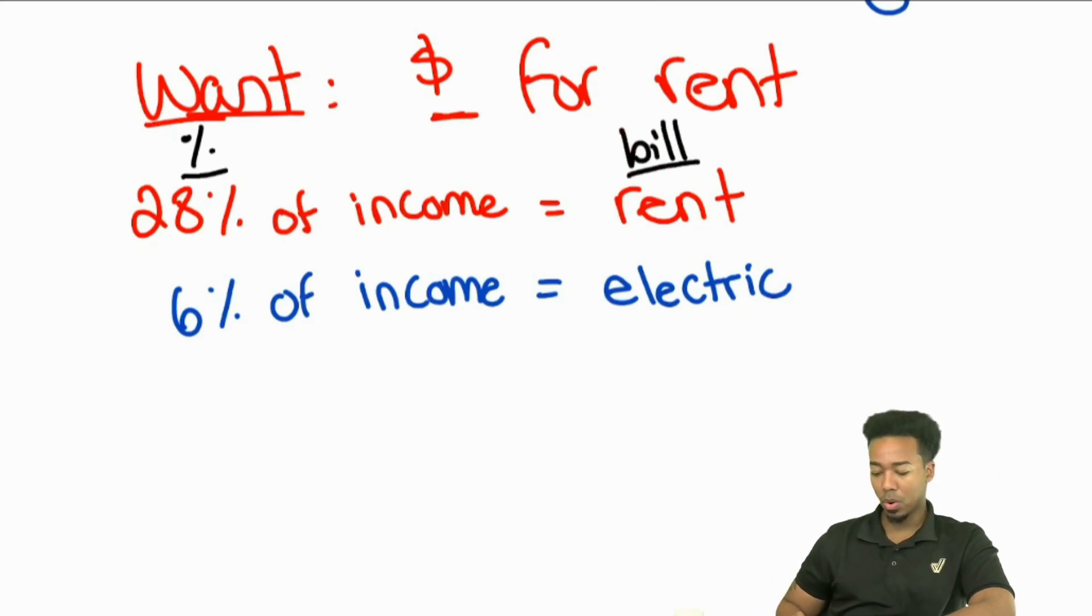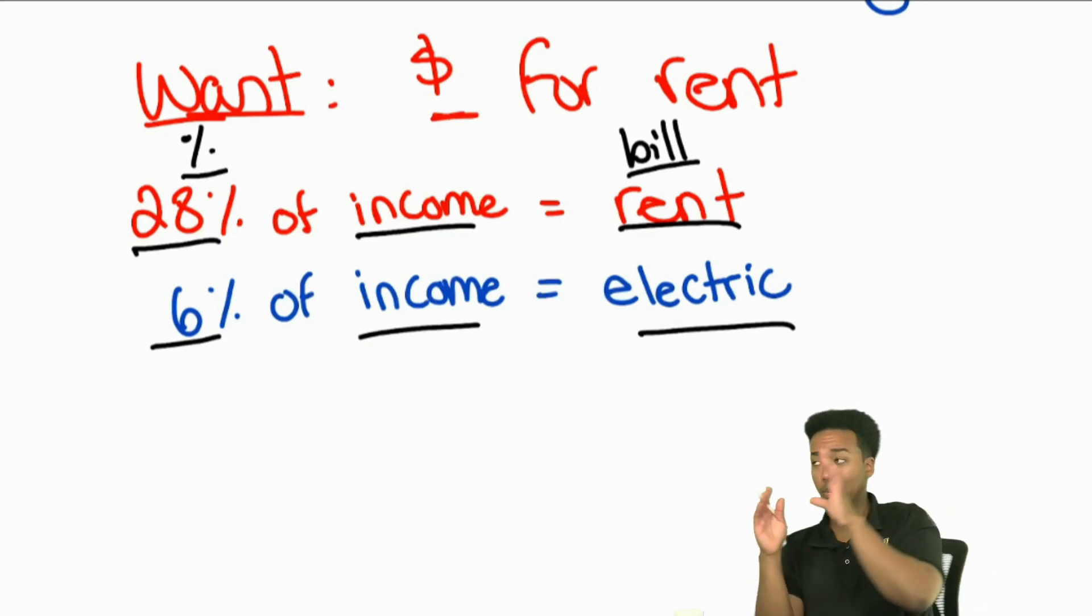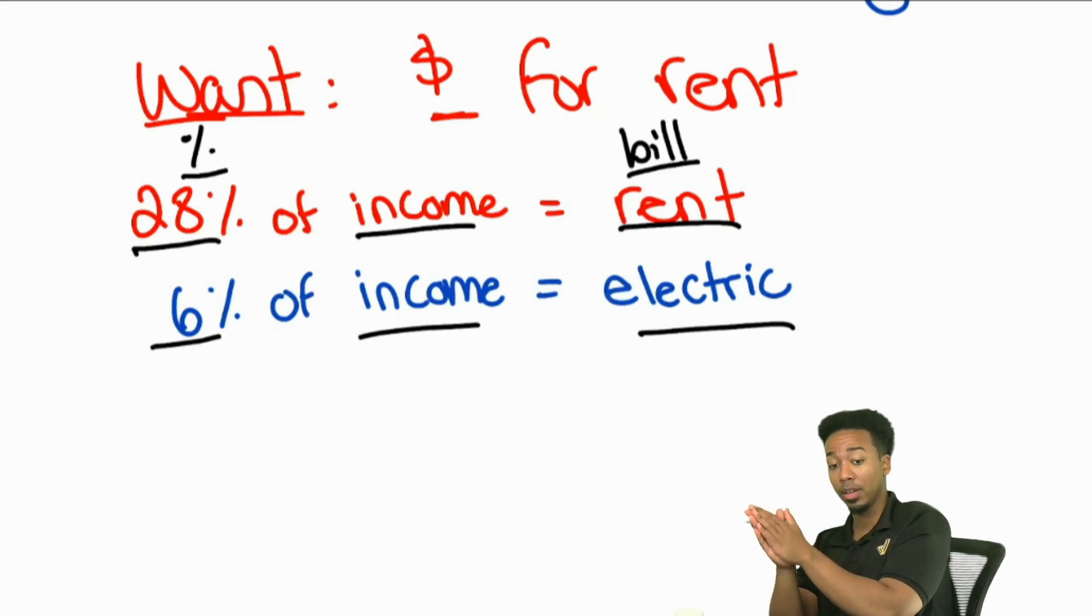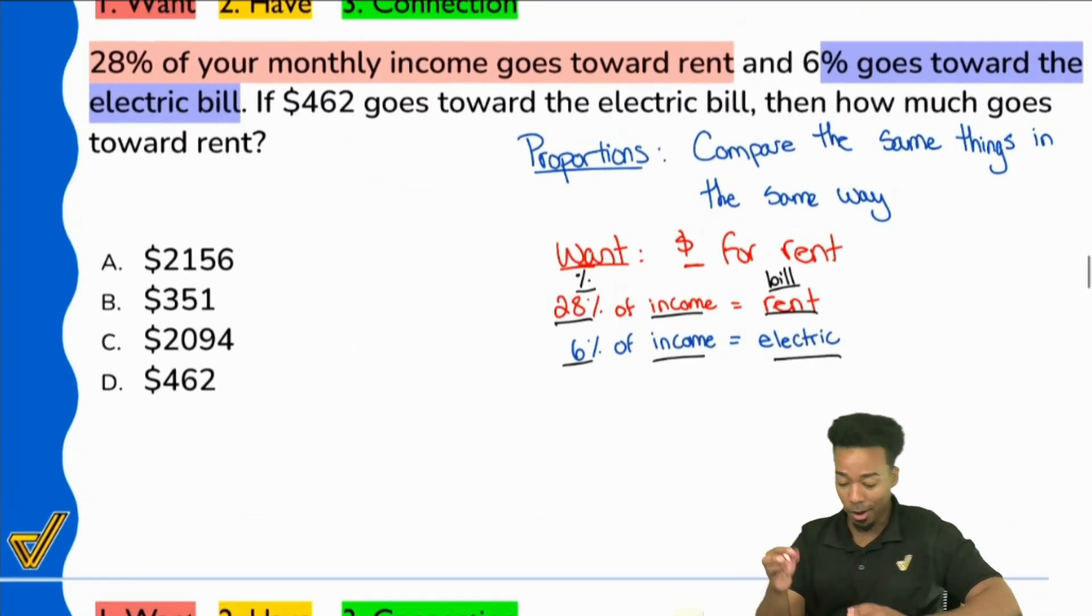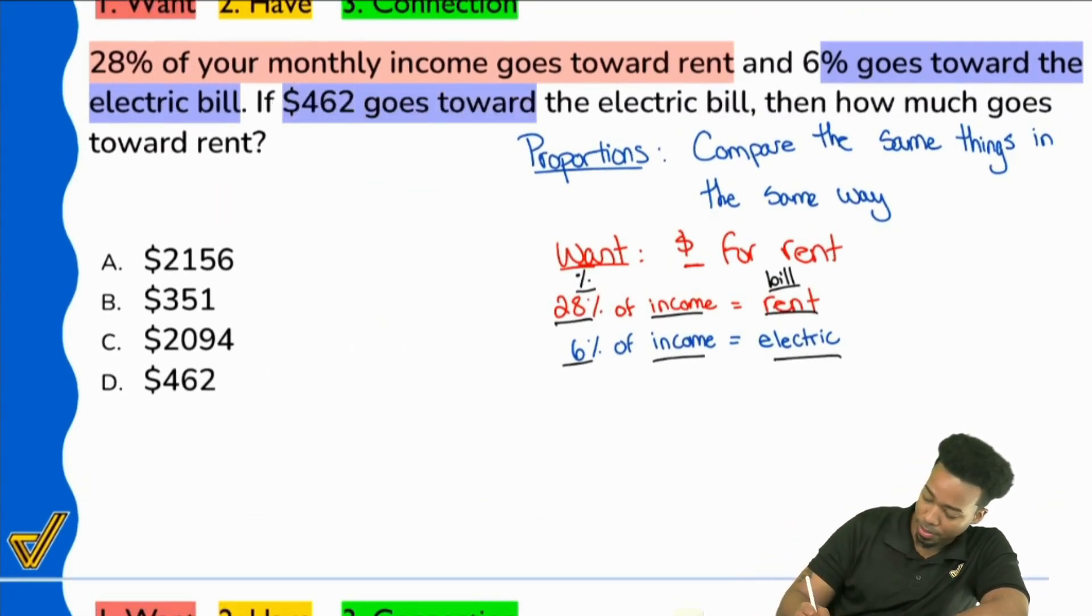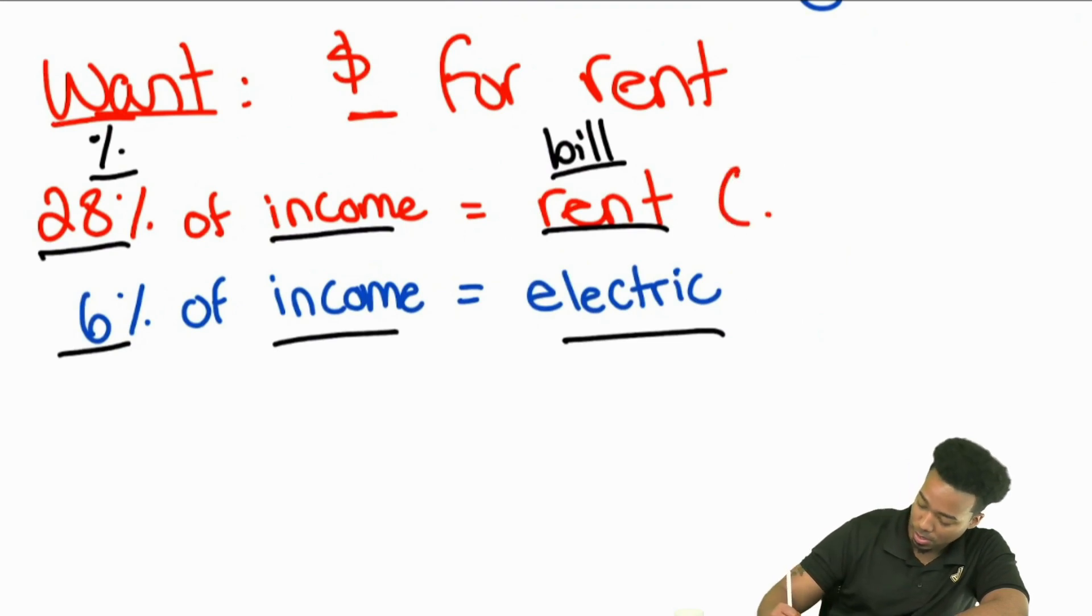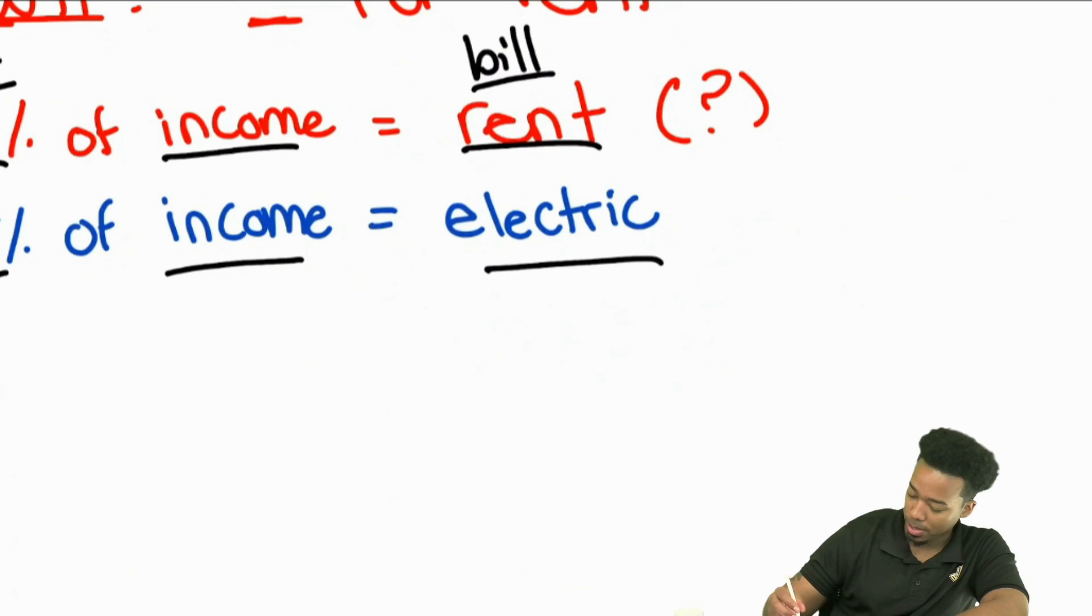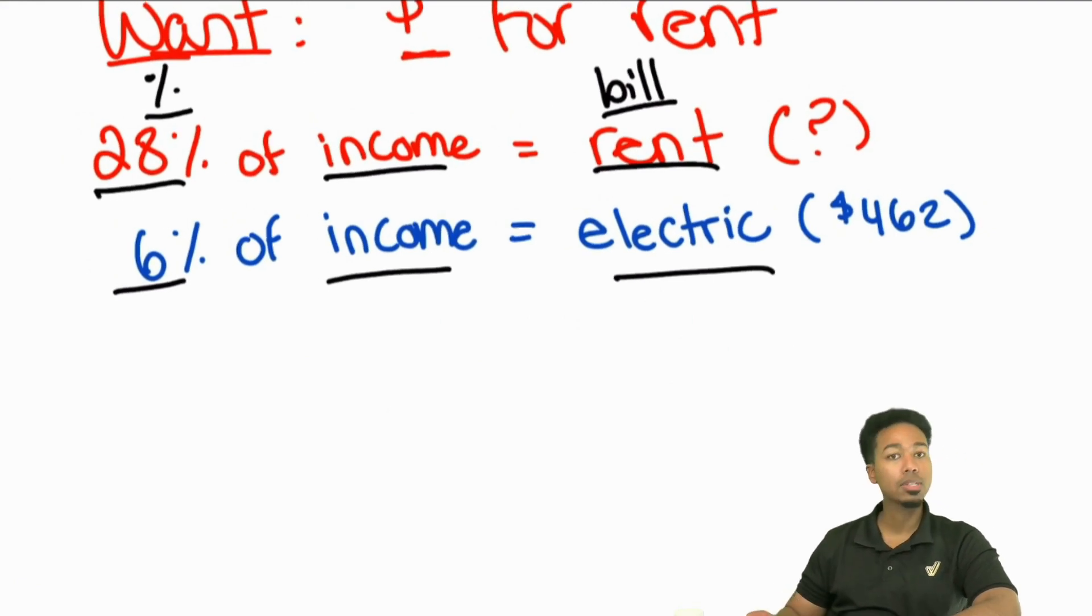This is comparing the same things in the same way because the income is the same thing. A percentage of your income is the bill. Percentage of your income is the bill. Does everybody here see what I'm saying? We're comparing the same things the same way. We're giving the percent for the rent. We're looking for the amount of the rent. They give us the percent of the electric bill. We actually have the amount of the electric bill right here. This is a proportion. This is a proportion because we're looking for this and they give us, what was it again? 462.